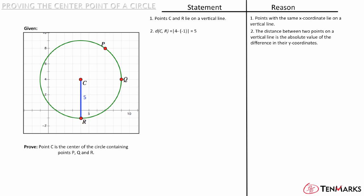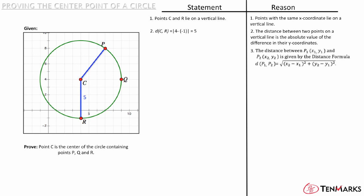How would you find the distance from point C to point P? Since P does not lie on the same horizontal or vertical line as point C, you have to use the distance formula. The distance formula states that the distance between two points is the square root of (x2 minus x1) squared plus (y2 minus y1) squared. Plug in the values for x and y from point P, which are (7, 8), and C, which are (4, 4). This gives you the distance as the square root of (7 minus 4) squared plus (8 minus 4) squared. Solve through to find that the distance between the two points is 5.